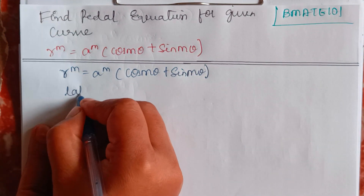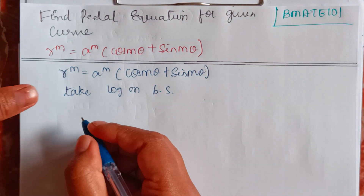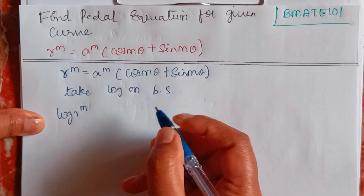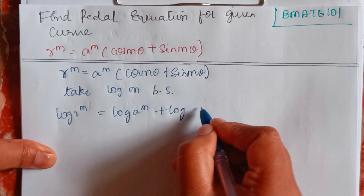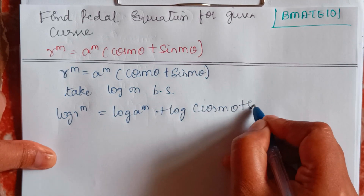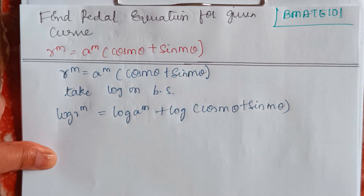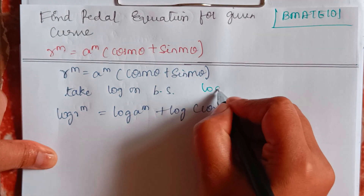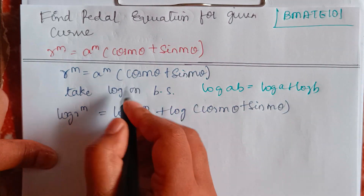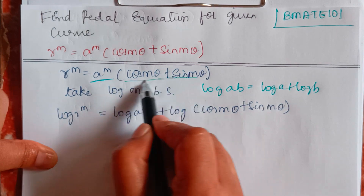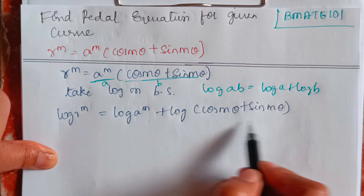The first step we take is taking the log on both sides. So log r^m equals log a^m plus log(cos mθ + sin mθ). If you don't know how I expanded this — the formula is log(a × b) can be written as log a plus log b. So here a is a^m and b is (cos mθ + sin mθ), giving log a^m and log(cos mθ + sin mθ).